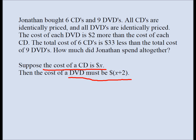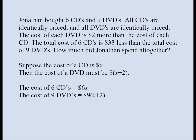Now Jonathan didn't buy one DVD and one CD — he bought six CDs and nine DVDs. So we need to find the cost of six CDs and nine DVDs. If the cost of one CD is x, the cost of six CDs should be 6 times x. If the cost of one DVD is x plus 2, the cost of nine DVDs must be 9 times x plus 2.